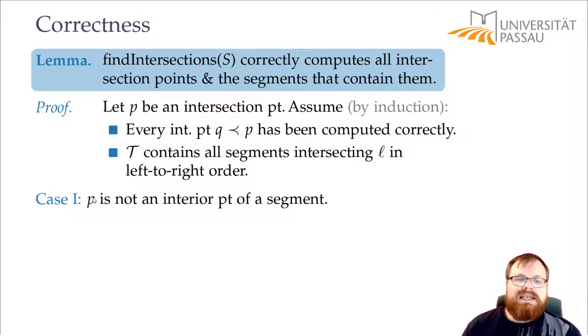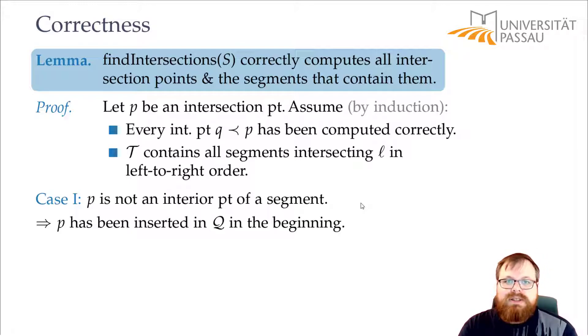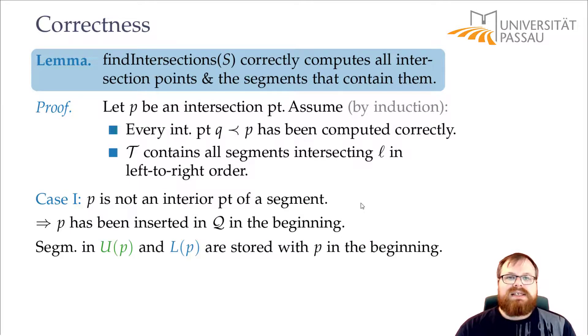What happens now? P is clearly the endpoint of a segment, so we have already inserted it into the queue in the very beginning when we initialize the queue. The segments that are in U(P), so that start in P and go downwards, and those in L(P) that end in P, are stored with P in the very beginning.